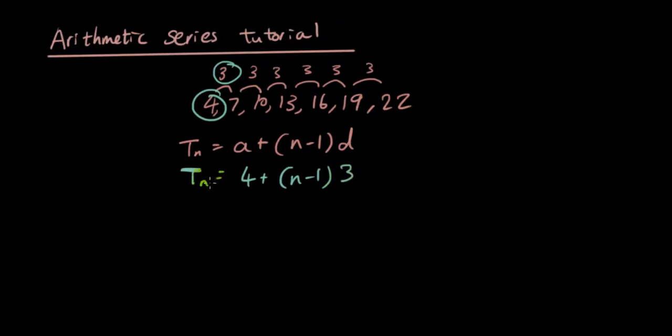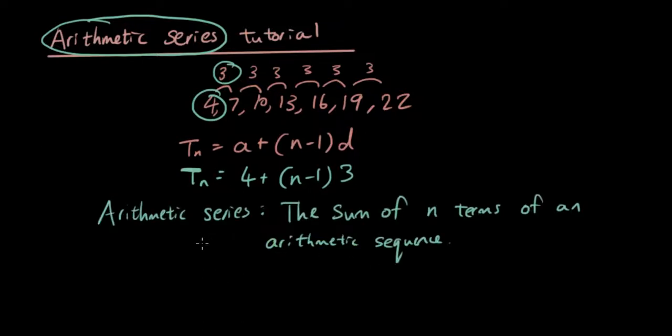That is the formula for an arithmetic sequence. Now we are going to talk about what an arithmetic series is. So a series is when we add up the terms in our arithmetic sequence. Arithmetic series is the sum of n terms of an arithmetic sequence.